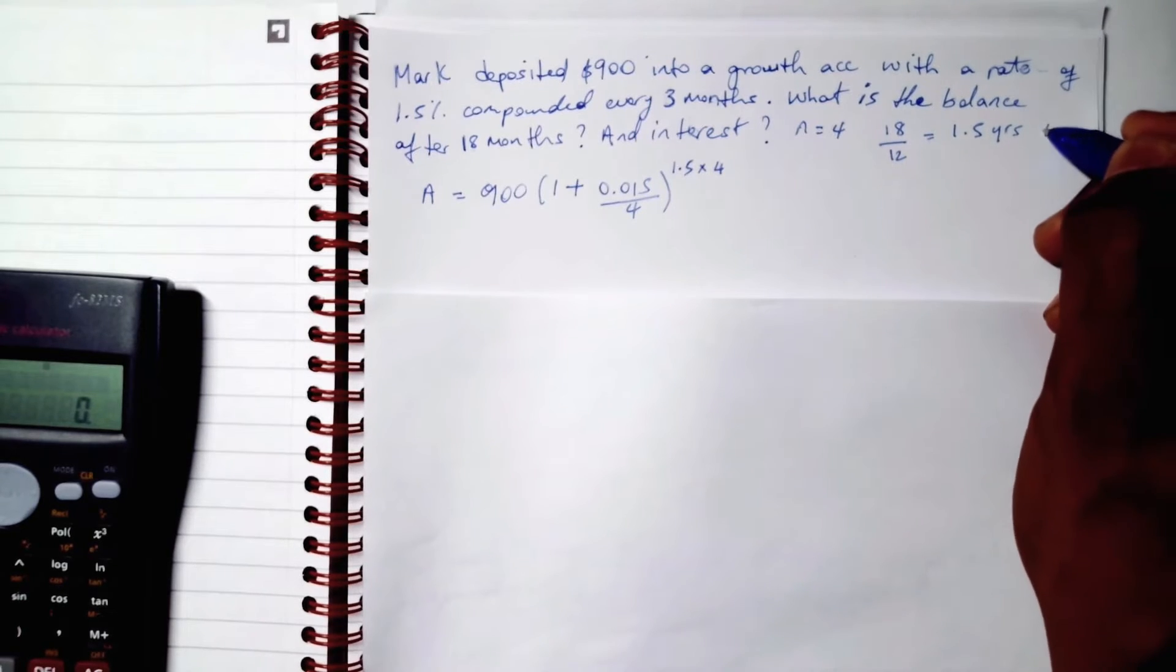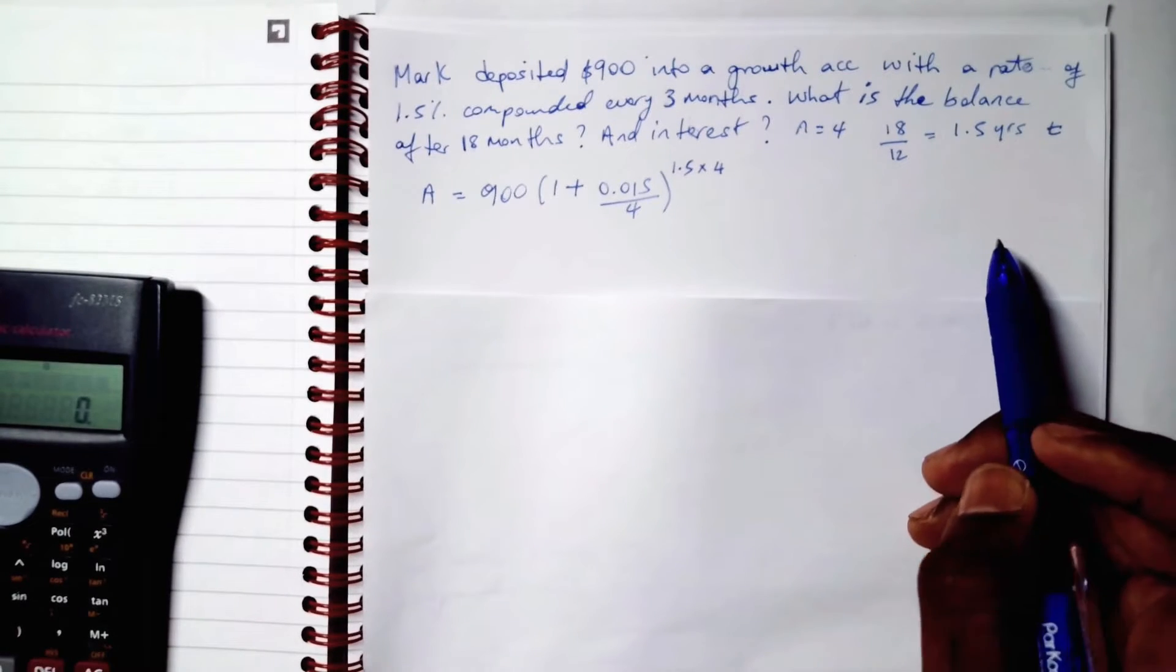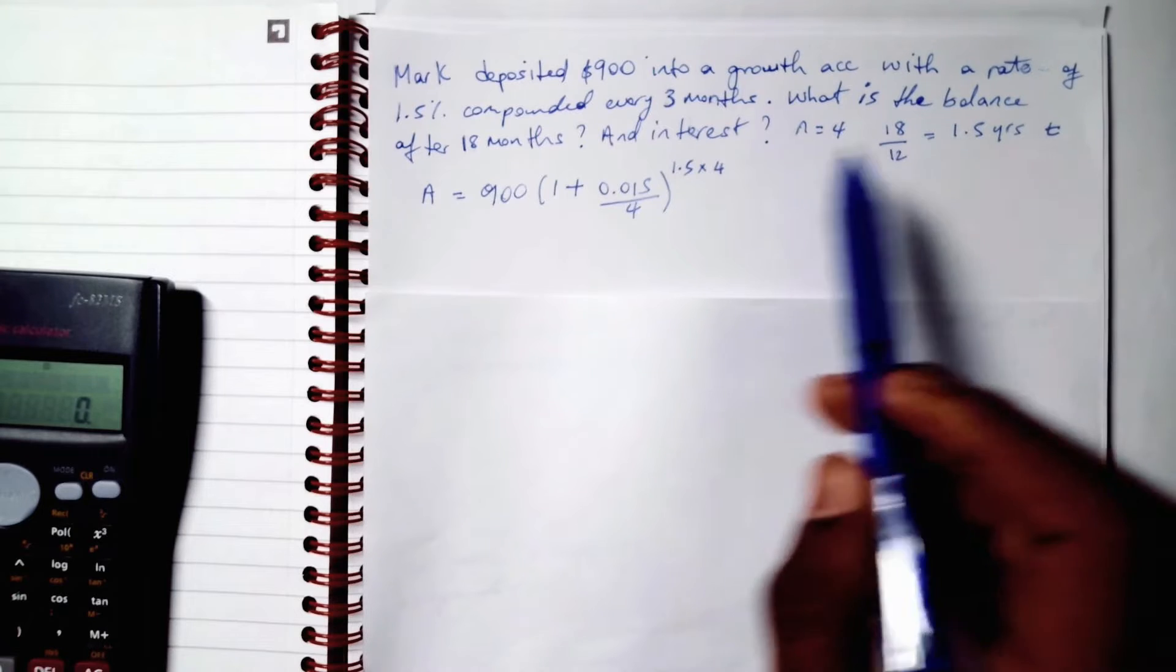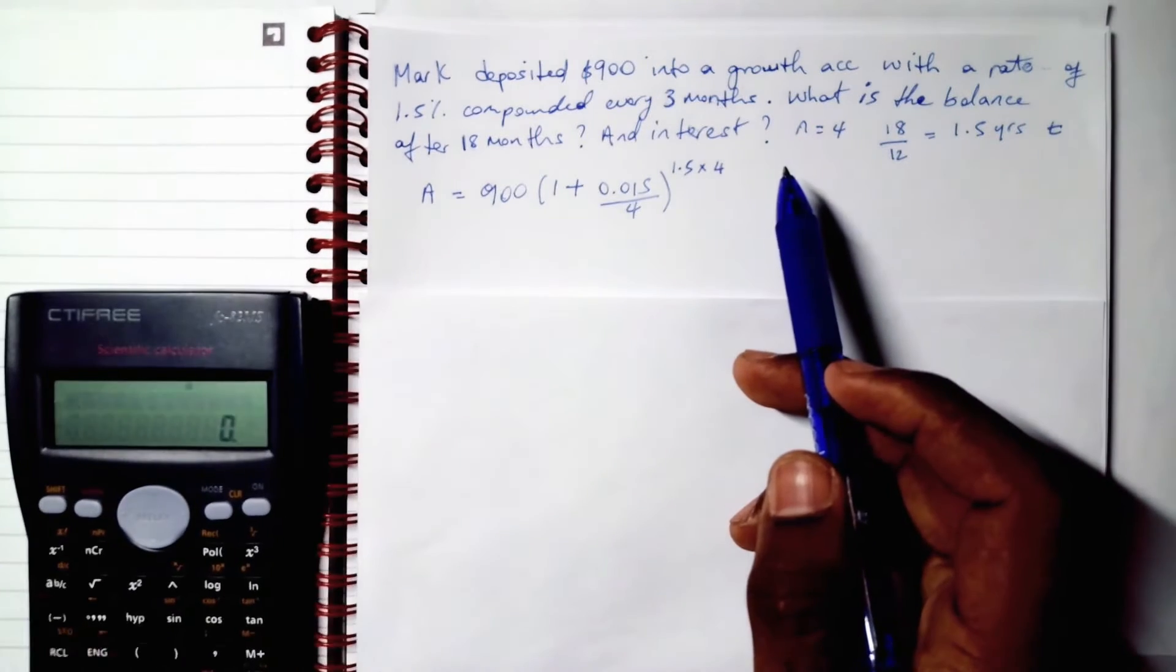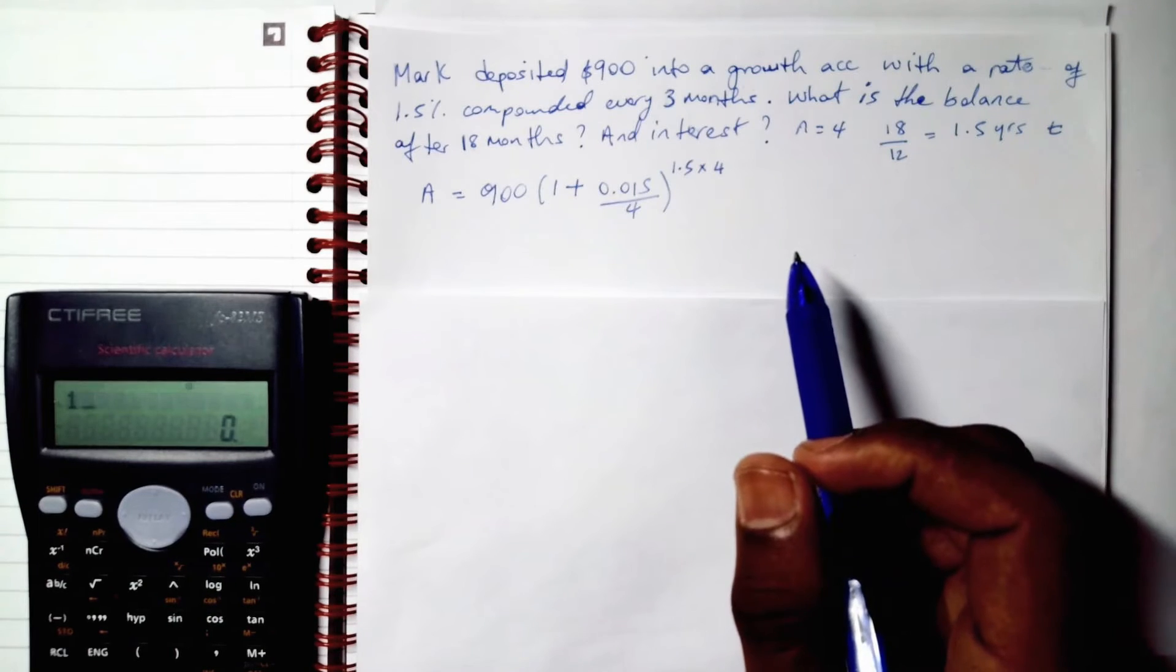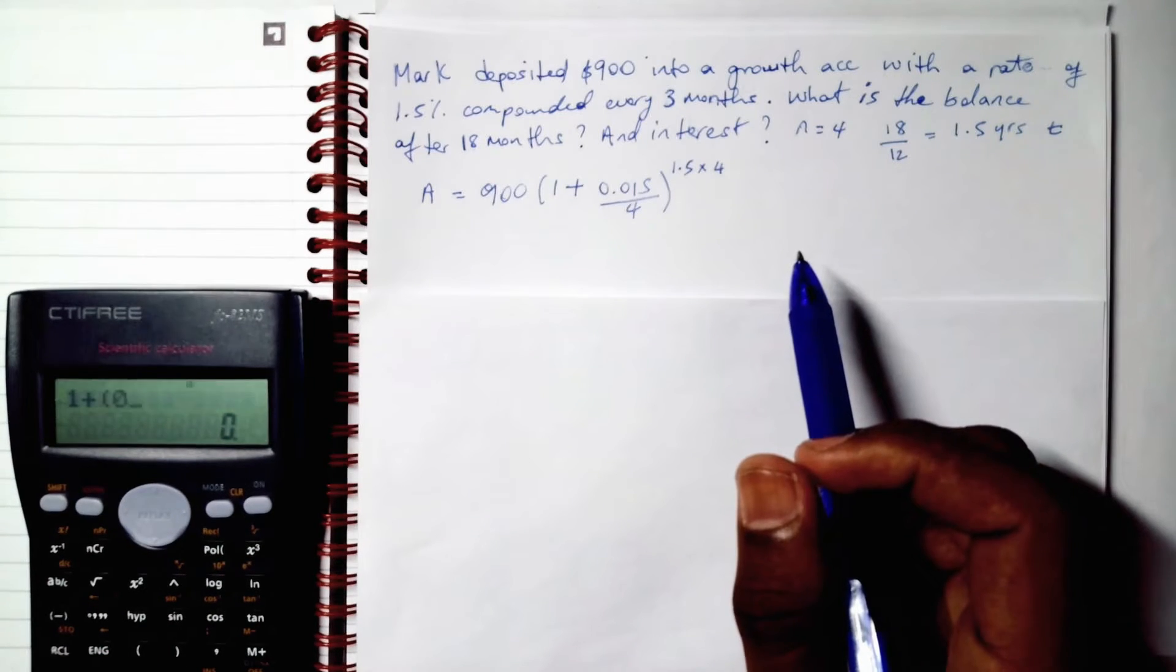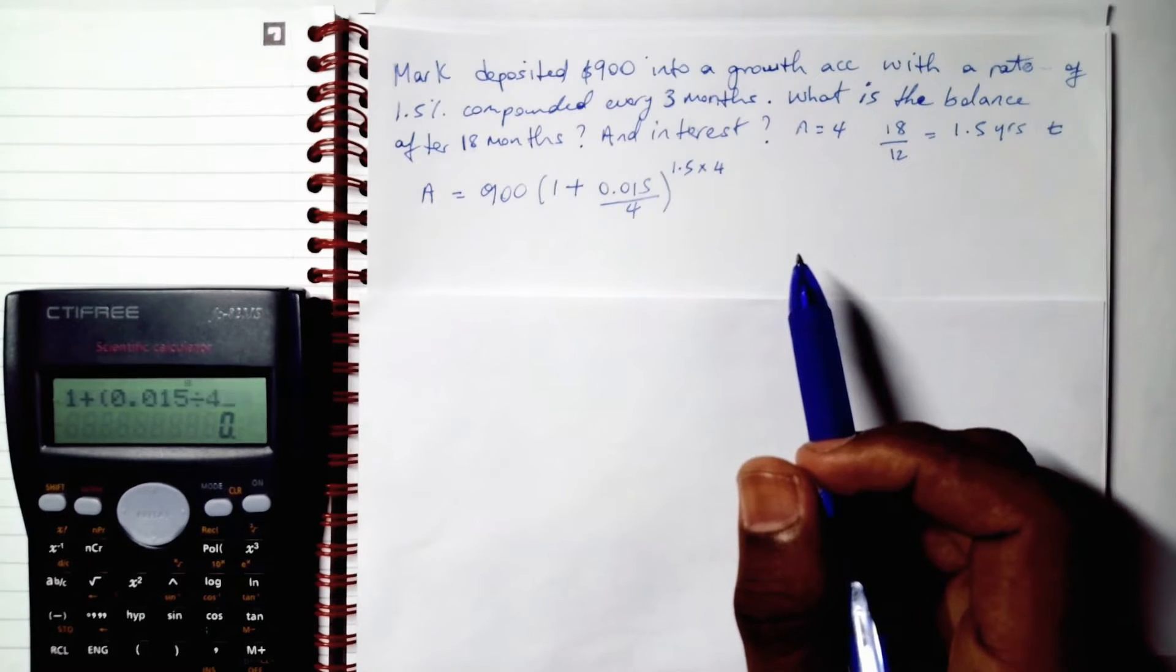1.5 is our T. This is our T. And 4 is our N. Let's calculate. 1 plus 0.015 divided by 4 equals that.